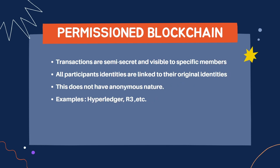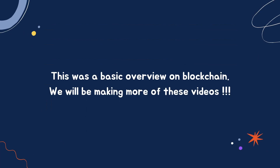The last type is permissioned blockchain. Transactions are semi-secret and visible only to specific members — such as admins, collaborators, or specially permissioned people. All participant identities are linked to their original identity, meaning identities are KYC-enabled, and it does not have the anonymous nature of public blockchains. Examples are Hyperledger and R3 — Hyperledger is quite popular and you may have heard of it. These are the three types of blockchain.